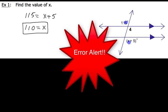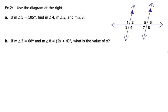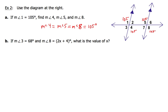For example 2, we're given that angle 1 is 105 degrees, and we need to find angles 4, 5, and 8. Angle 4 is vertical to angle 1, so that's also 105. Angles 1 and 5 are corresponding, so angle 5 is 105. Angle 1 and angle 8 are alternate exterior angles, so angle 8 is 105 as well. So the measure of angle 4 equals the measure of angle 5 equals the measure of angle 8 equals 105 degrees.